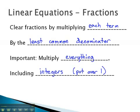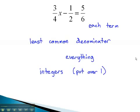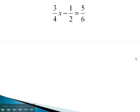So let's look at how we can clear fractions out of an equation by multiplying each term on both sides by the least common denominator. In this problem, you'll notice we have denominators 4, 2, and 6. The least common denominator of those 3 numbers is 12.